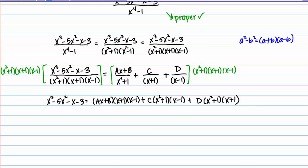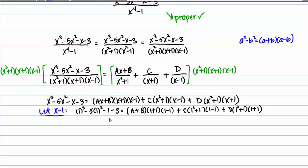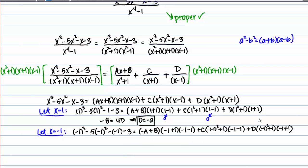Some convenient values are x equals 1 and x equals negative 1, since those will cause some terms to go away. Starting with x equals 1: plugging in and simplifying, I end up with negative 8 equals 4d, which tells me that d equals negative 2. Then letting x equal negative 1: I see factors of 0 appear on the right-hand side, and after reducing I end up with negative 8 equals negative 4c, which tells me that c equals positive 2.